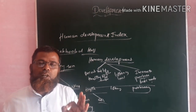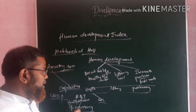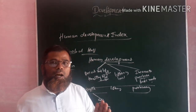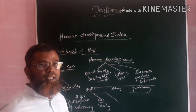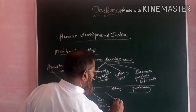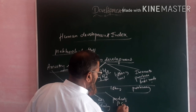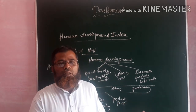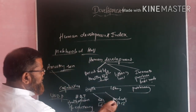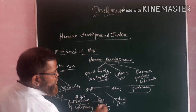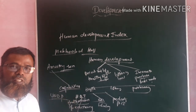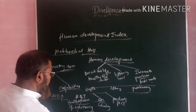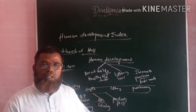The third factor is purchasing power, or per capita income — the ability to purchase various basic commodities or basic needs of life. The average of these three factors — health, education, and purchasing power — is responsible for measuring development. By taking the average of these three factors, we can measure the Human Development Index of a particular country.